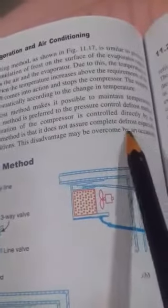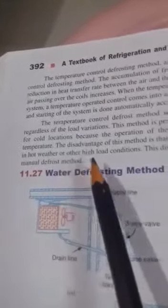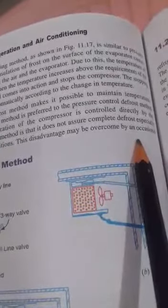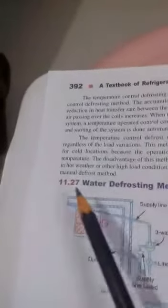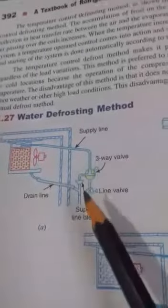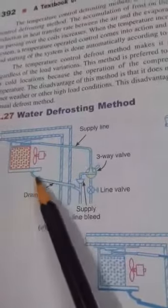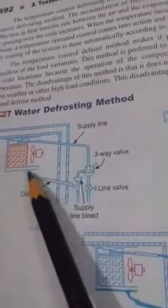This disadvantage may be overcome by occasional manual defrosting. For the water defrosting method, an operator uses a three-way valve which allows hot water to spray on the evaporator. After defrosting is complete, the water flows through a drain line. There is a supply line for the hot water and a drain line through which the water returns after being sprayed over the evaporator.